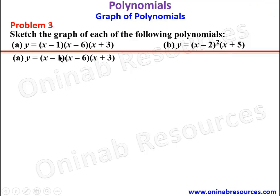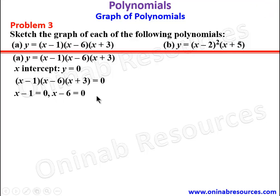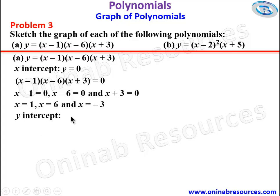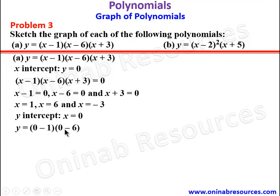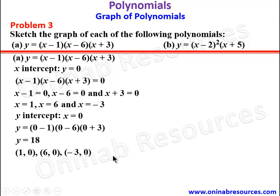For x-intercept, y is equal to 0. We equate x minus 1 into x minus 6 into x plus 3 to 0. Setting each factor to zero: x minus 1 equals 0, x minus 6 equals 0, and x plus 3 equals 0, giving x equal to 1, 6, and negative 3. For y-intercept, x is equal to 0, so we compute 0 minus 1 into 0 minus 6 into 0 plus 3: negative 1 times negative 6 gives positive 6, times 3 gives 18. So y equals 18. Our points are 1 comma 0, 6 comma 0, negative 3 comma 0, and 0 comma 18.